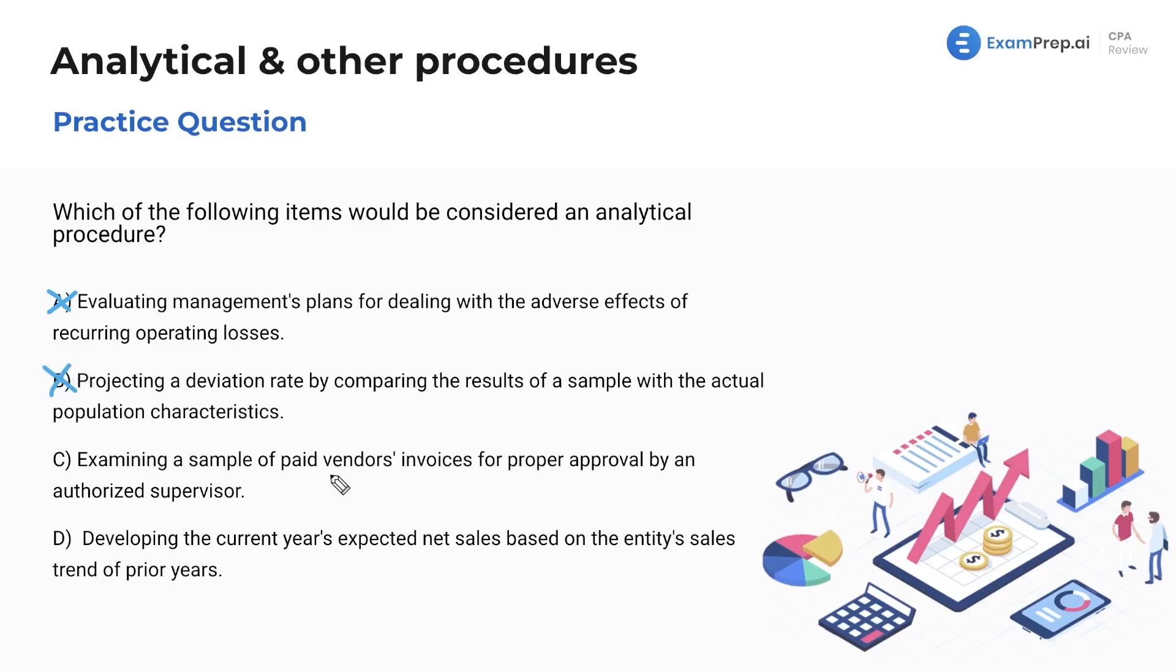Examining a sample of paid vendors' invoices. So this is substantive procedures. This is us verifying the accuracy of some numbers in the financial statements. So that would be substantive procedures. And as such, it wouldn't be analytical. Lastly, developing the current year's expected net sales based on the entity's sales trend of prior years. That sounds pretty spot on to an analytical procedure. And let's think about the purposes of these. A lot of times you'll do analytical procedures in planning. You're trying to get a general idea of what the numbers should look like. So that is kind of what we're looking at in letter D right there. So good example.